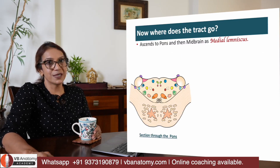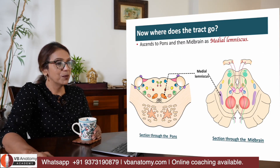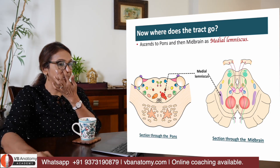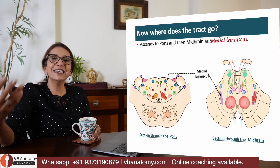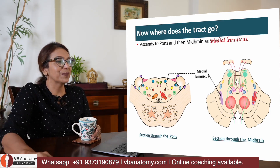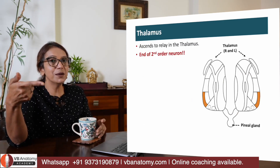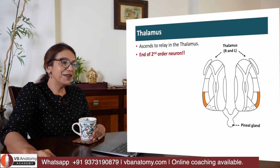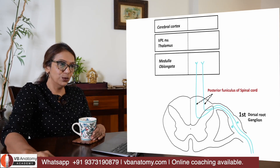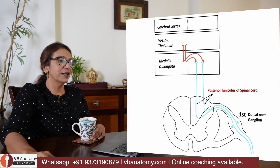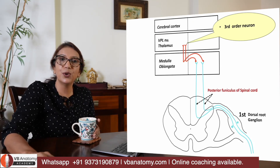Now the fibers go to the pons, then to the midbrain. The body representation keeps rotating as they ascend. We need to know this because the level and side of a lesion can be anticipated from the pattern of sensory loss. Finally, these second order neuron fibers relay in the VPL nucleus of the thalamus, where the third order neuron begins.